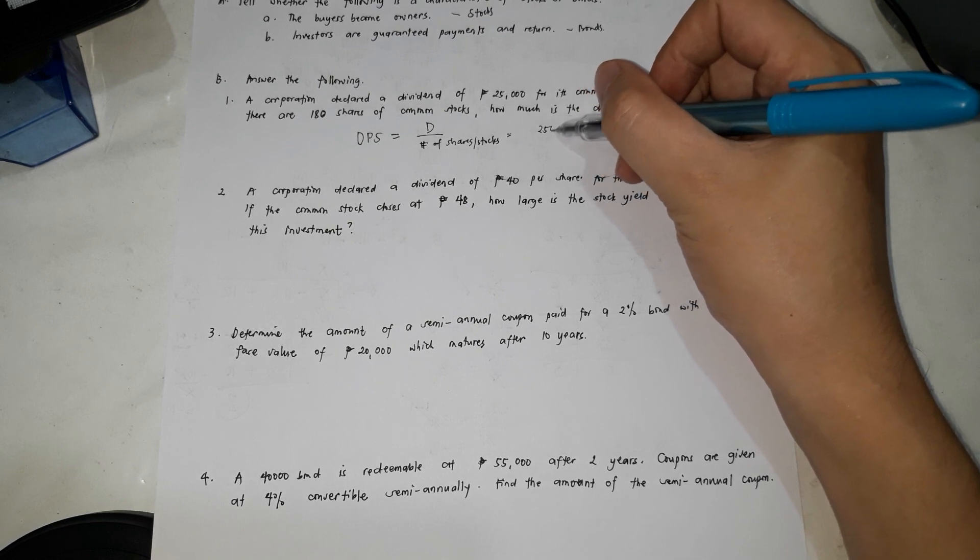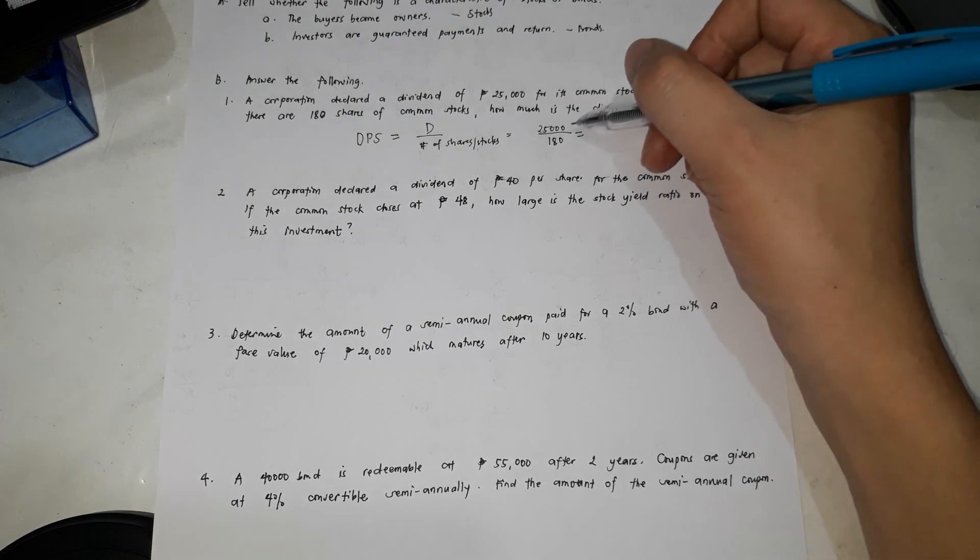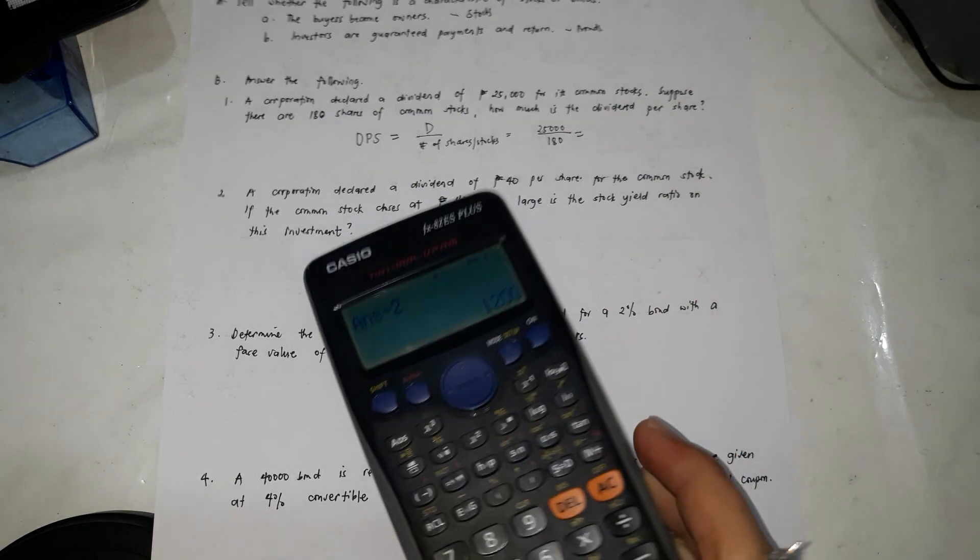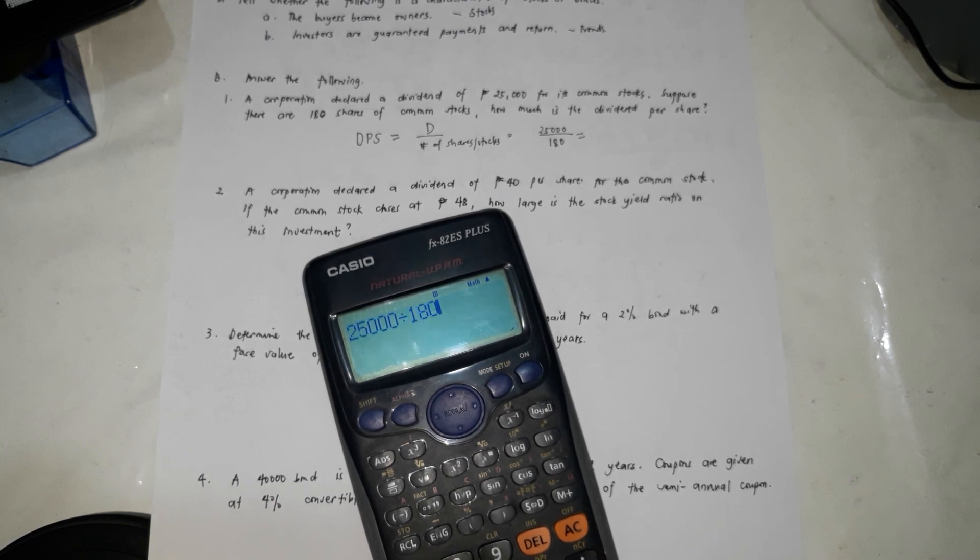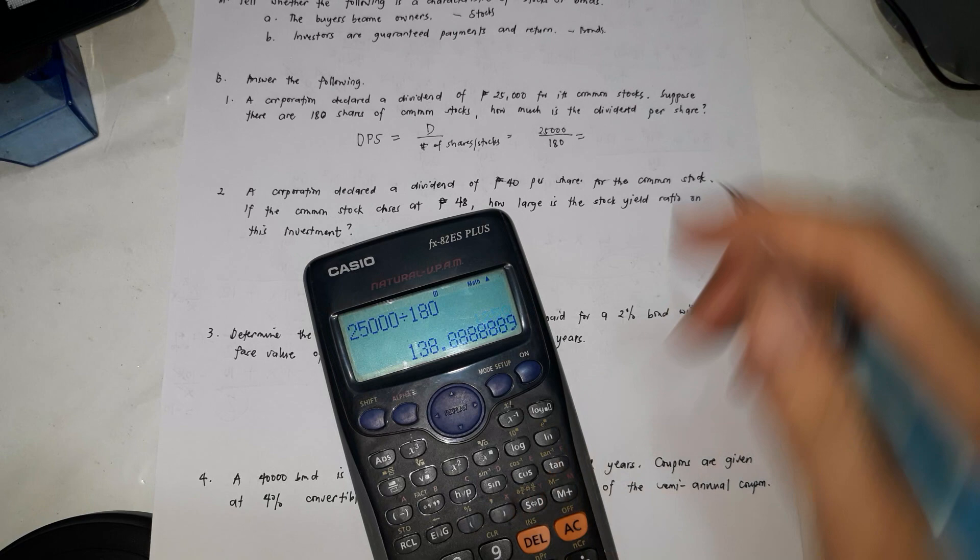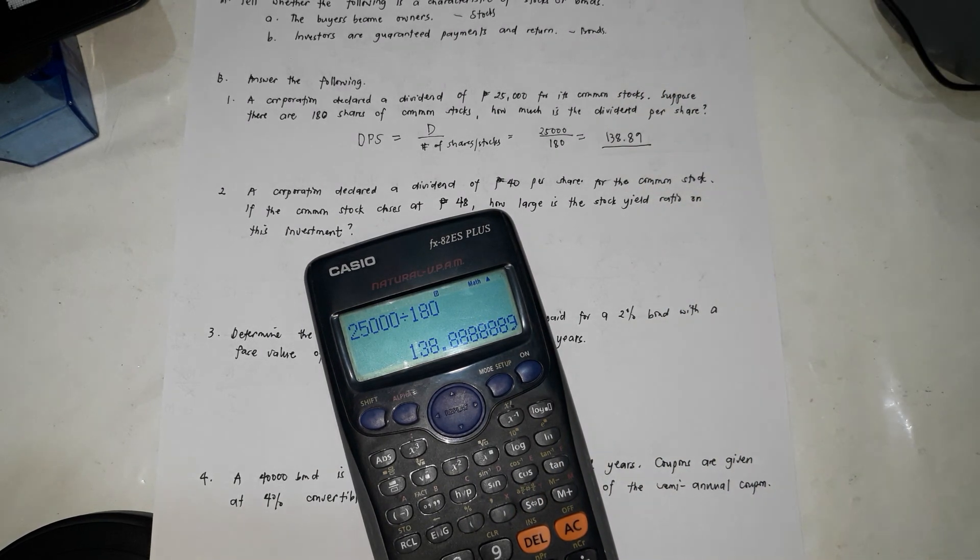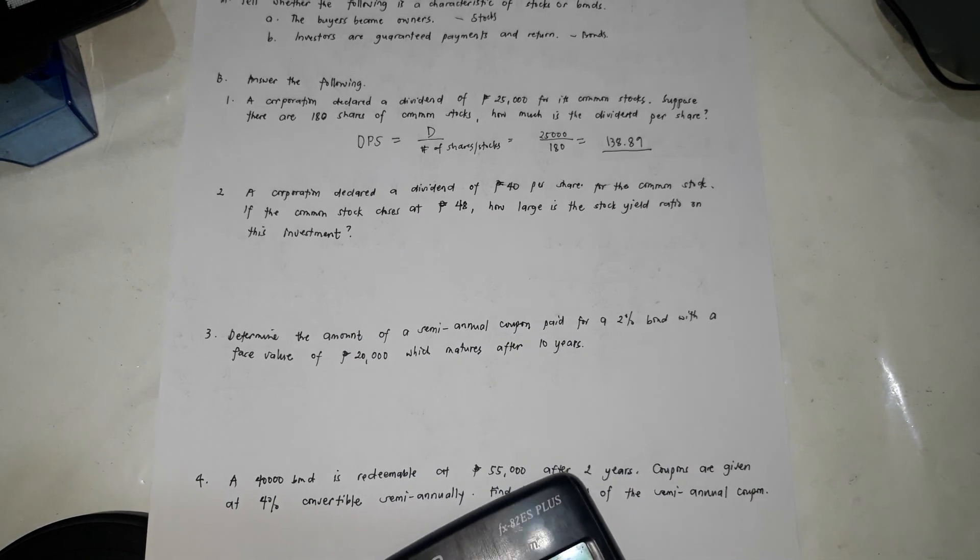So for this one, the dividend is 25,000. This is the profit divided by 180 stocks. So the answer is 25,000 divided by 180, it's 138.89. So ibig sabihin, per stock, you're going to receive 138.89.